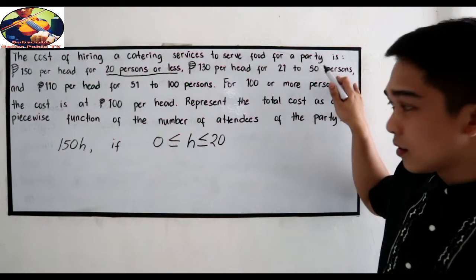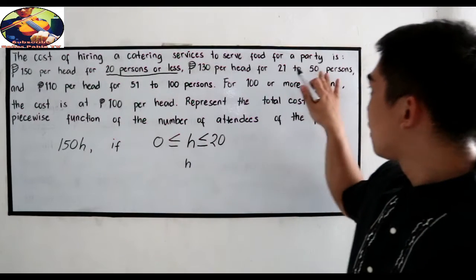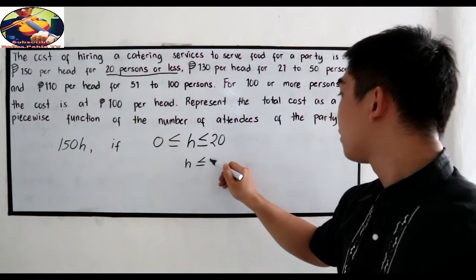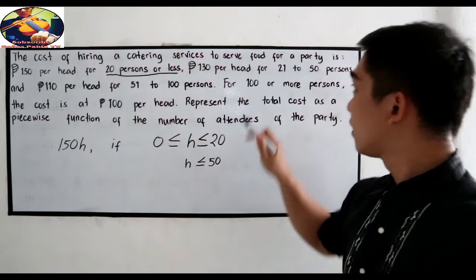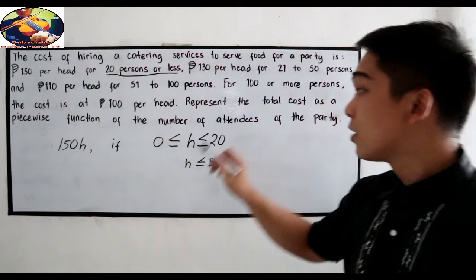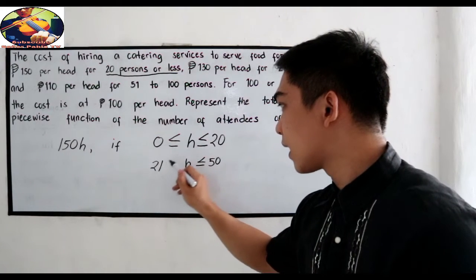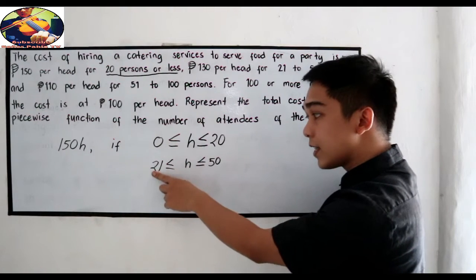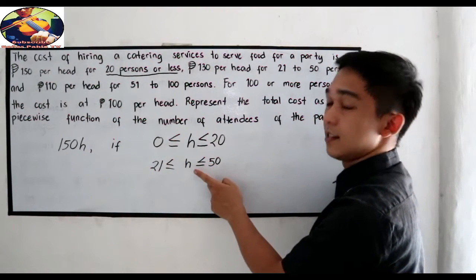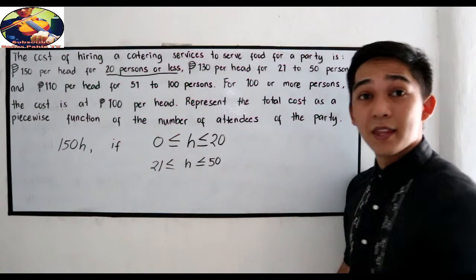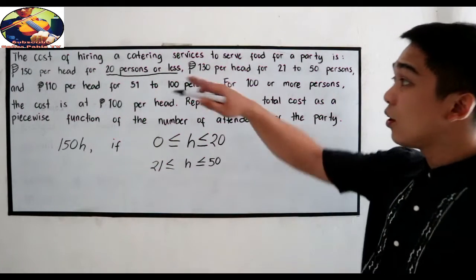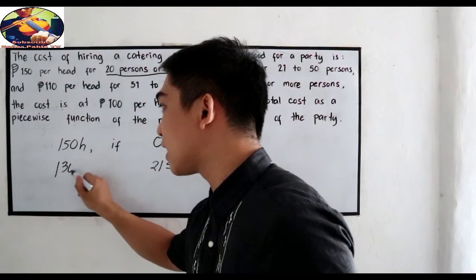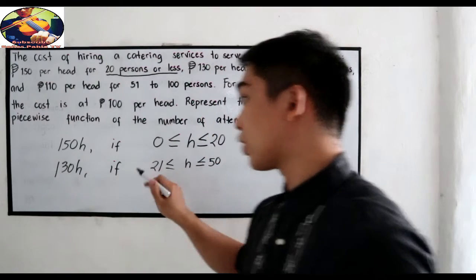Next condition: 130 pesos per head for 21 to 50 persons. So kapag ang h ay greater than or equal to 21 but less than or equal to 50, ang babayaran nila ay 130 per head. So ang cost ay 130h if that is our condition.